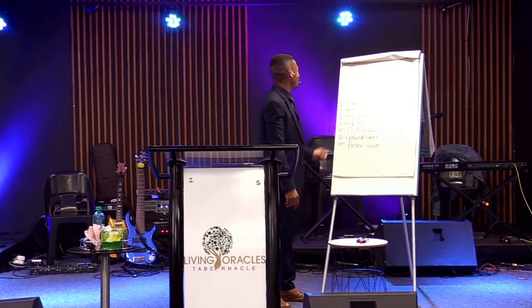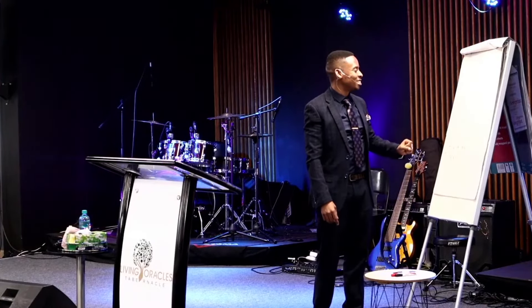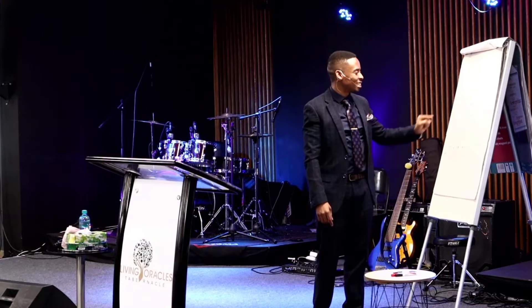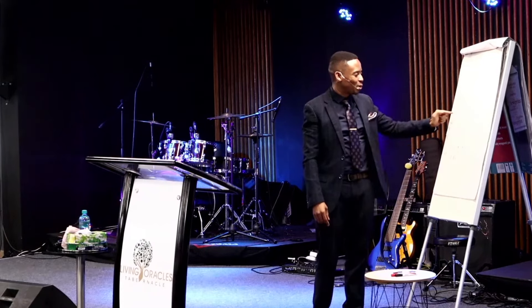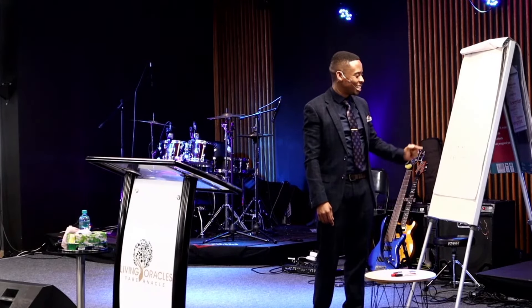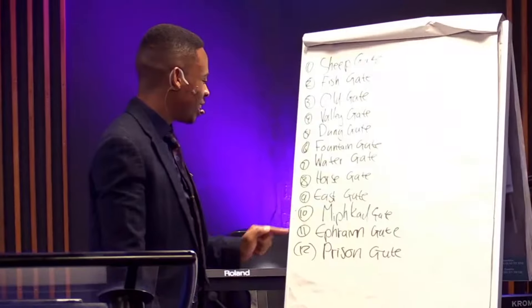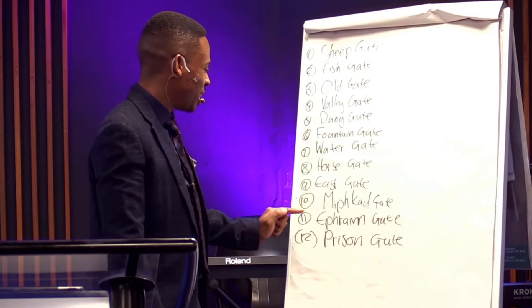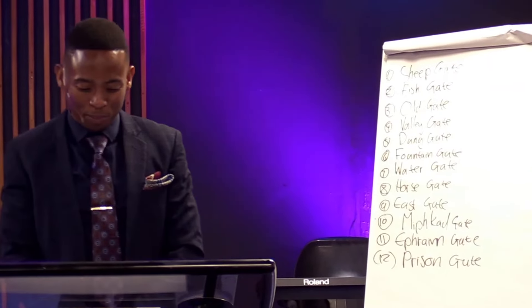We've got the sheep gate, the fish gate, the oil gate, the valley gate, the dung gate, the fountain gate, the water gate, the horse gate, the east gate, the Miphkad gate, the Ephraim gate, and the prison gate. All of this is found in the book of Nehemiah.